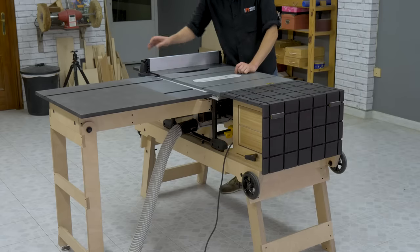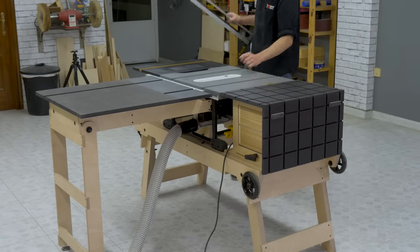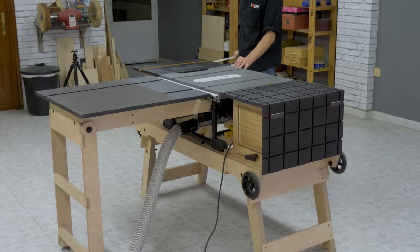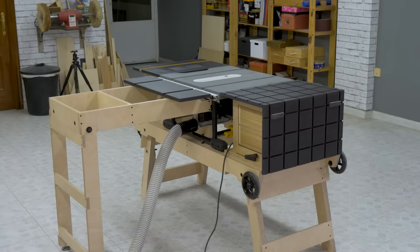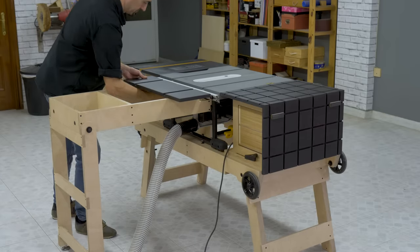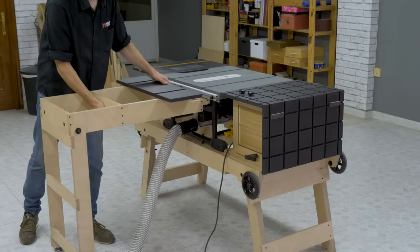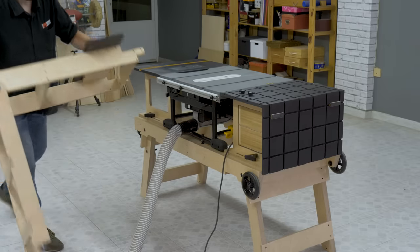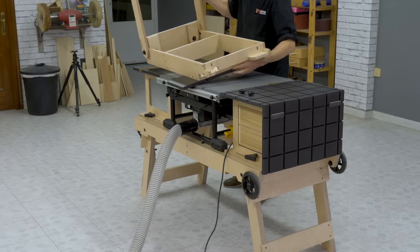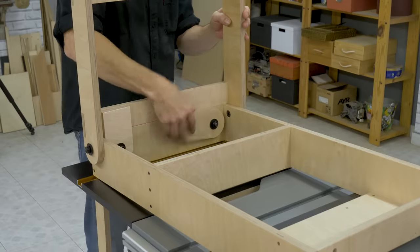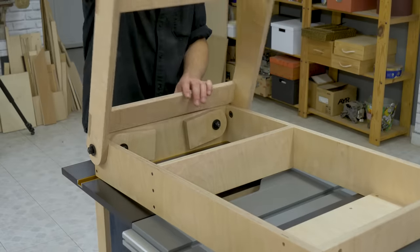Dismounting the outfit table is just as easy as attaching it, or even more so. First of all, I remove the fence and the board I placed on it as a test. I loosen the knobs and remove the outfit table to place it on top of the jobsite saw. I turn the stops of the legs again so I can fold them in.